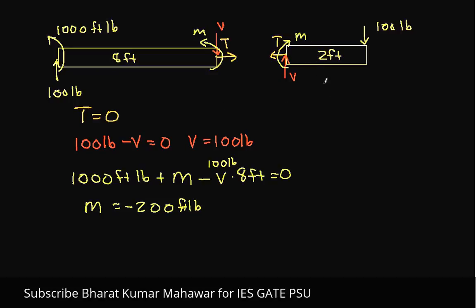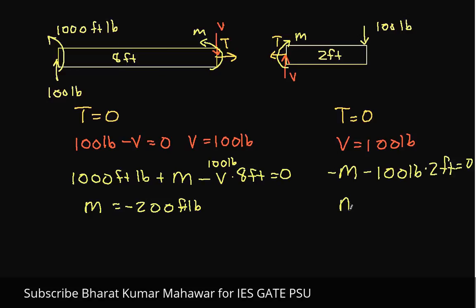Looking at the right free body diagram as a check: the sum of forces in x is 0, so T = 0. The sum of forces in y gives V = 100 pounds. For moments, we have minus M plus 100 pounds times the 2-foot moment arm counterclockwise equals 0, which again gives M = minus 200 foot-pounds. So it doesn't matter which free body diagram you use after making the cut — you get the same answer from the left side or the right side.